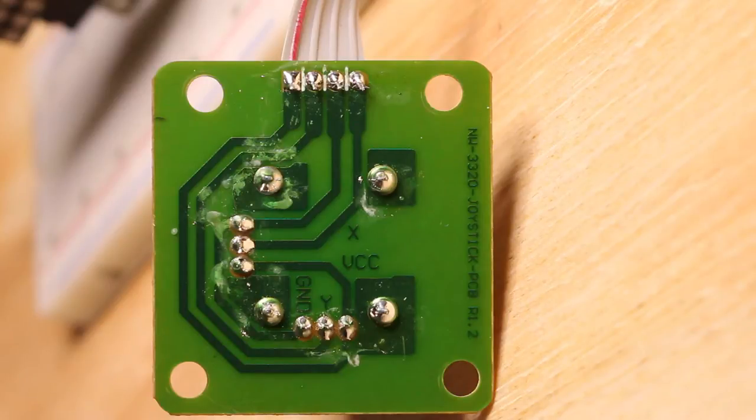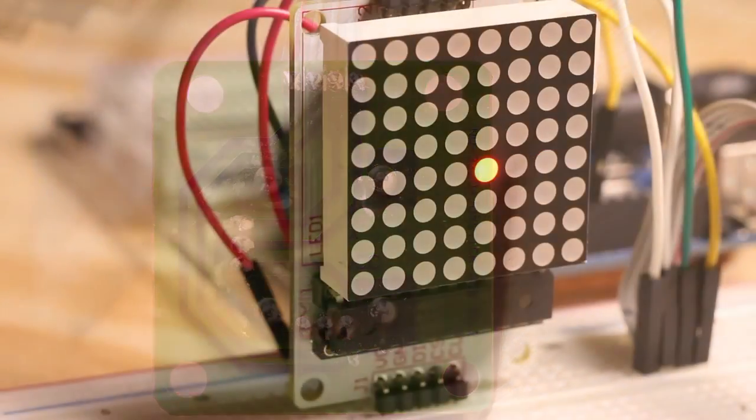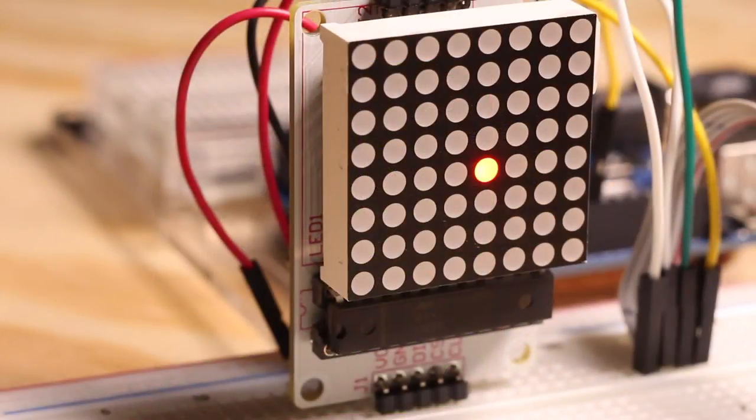When you look at the back of the board, you're going to see that the X and Y go to A0 and A1. VCC goes to 5 volts and then ground, so pretty simple. One thing to know is that you have to play around with the delay. To get it to work out, I have a delay of 150 milliseconds.